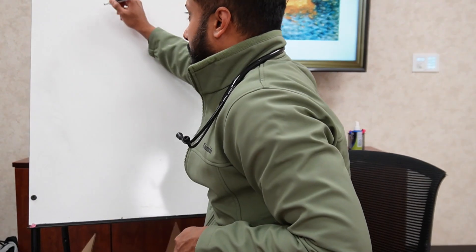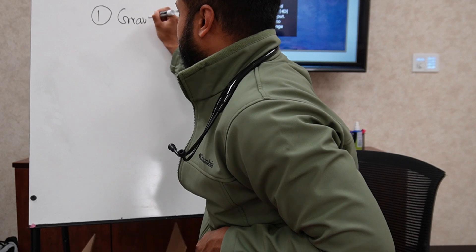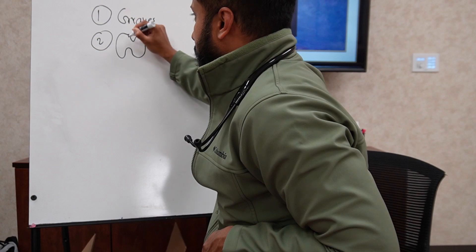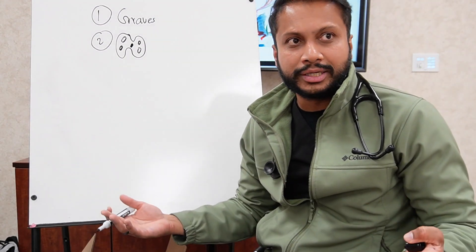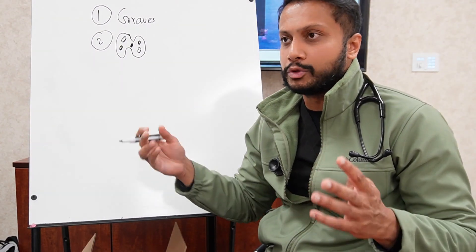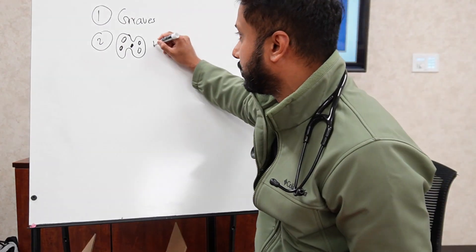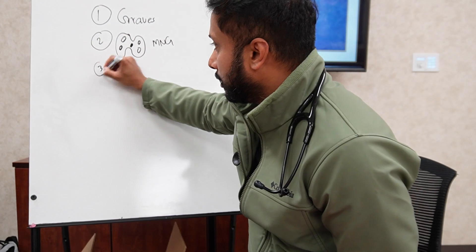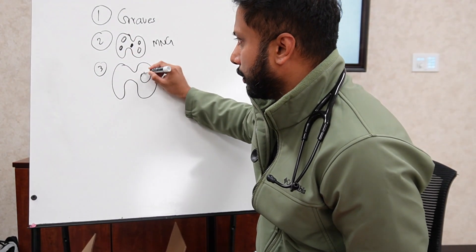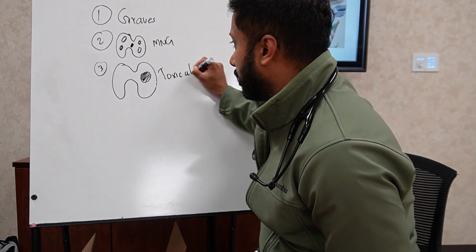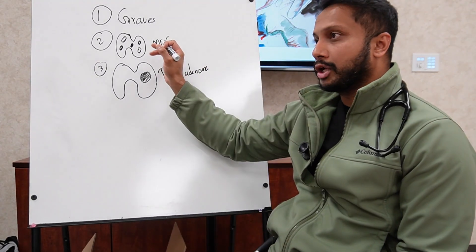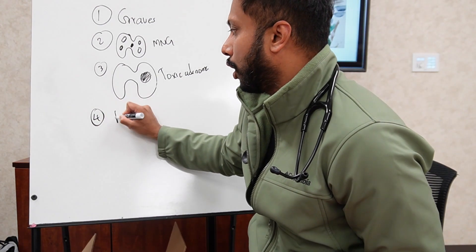Hashimoto's causes hypothyroidism, not hyperthyroidism. Number one is Graves disease. If I drew multiple nodules on the gland — a multi-nodular goiter — some of those nodules can actually get hyperactive. Multi-nodular goiter is another cause. Number three is a single nodule on the thyroid gland, which is called a toxic adenoma.